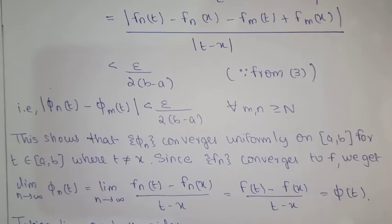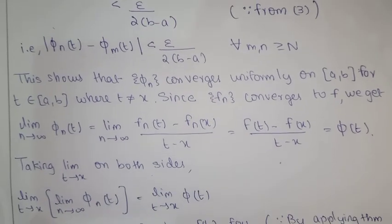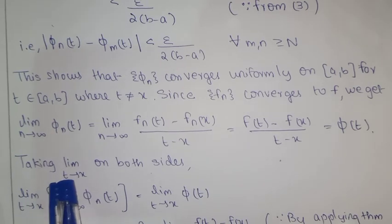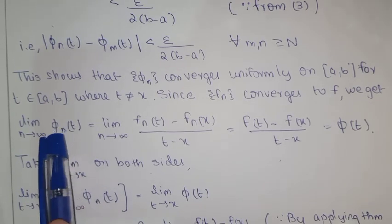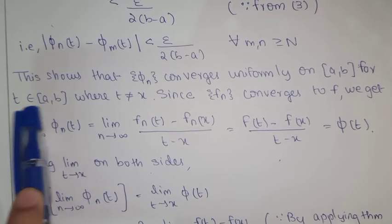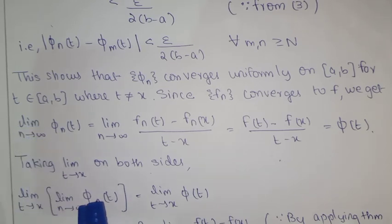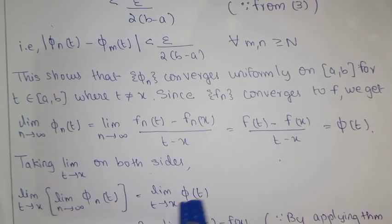Taking limits on both sides as t → x: lim(t→x) φ(t) = lim(t→x) lim(n→∞) φn(t) = lim(t→x) φ(t), which equals f'(x) = lim(n→∞) fn'(x). Hence the proof is complete.